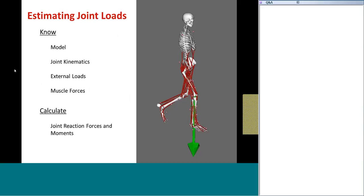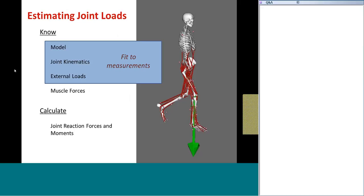In order to calculate load estimates for human walking subjects, we need some key pieces of information. We need to represent the structure of the subject with a model that describes the geometry, bones, joints, and muscles. We need kinematics that describe the walking motion and external forces that the ground applies to the feet. Finally, we need the muscle forces actuating the model. Unfortunately, we can only obtain the first three components from anthropometry, gait analysis, or other measurement methods — we can't directly measure in vivo muscle forces. Instead, we'll have to estimate muscle forces before we can calculate joint loads. OpenSim provides several tools for estimating muscle forces, and the joint reaction analysis can use results from any of these tools to calculate joint loads.